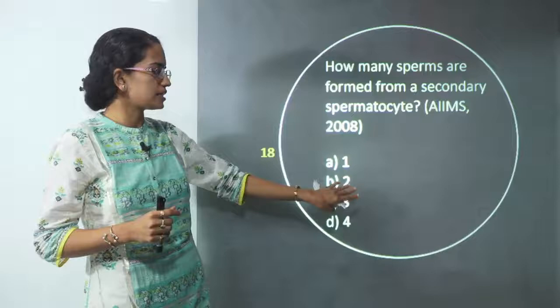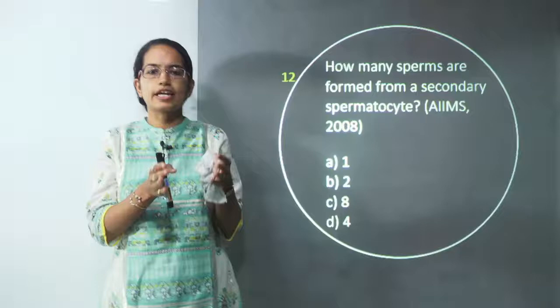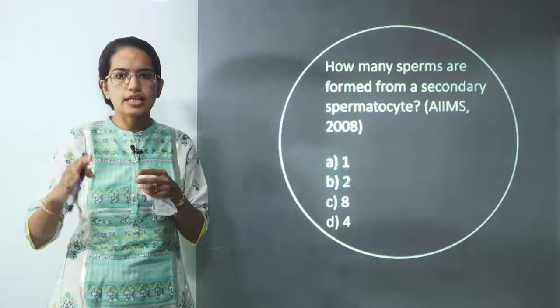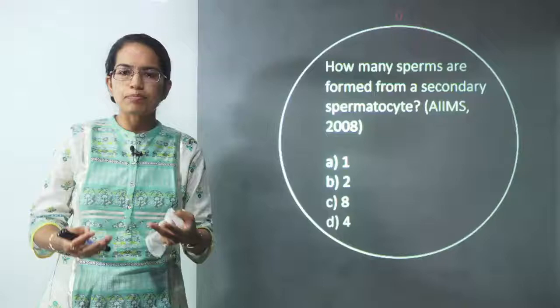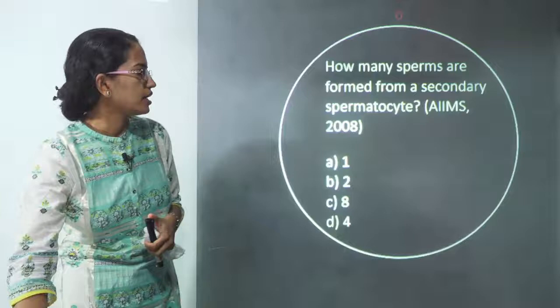The answer is two. You have two cycles of meiosis that occur. The primary spermatocyte divides in two phases — meiosis one and meiosis two. This question asks about the meiosis two stage, where haploid spermatocytes are formed and two are produced. So two is the correct answer.